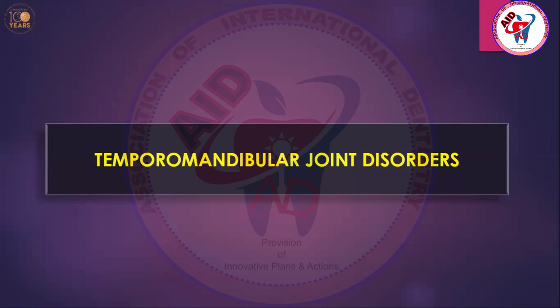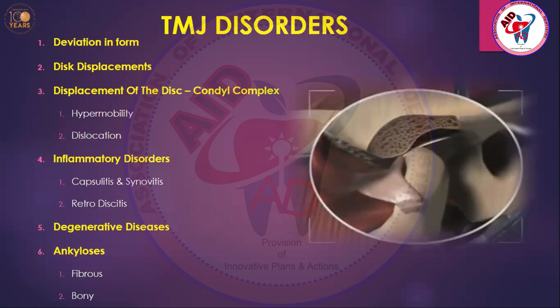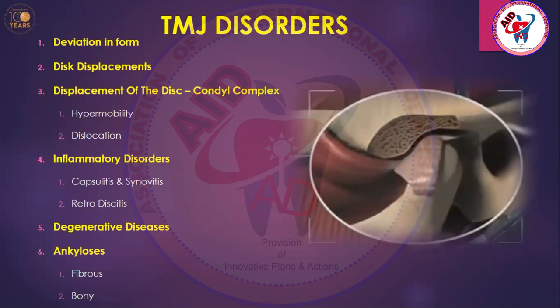Temporomandibular joint disorders are basically divided into six categories. We will not go into detail of the anatomy of the TMJ since we have covered all of that in detail previously. With that background, we will go directly to temporomandibular joint disorders.